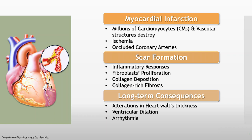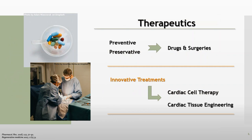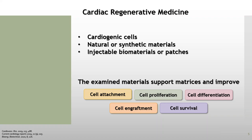As a consequence, fibroblasts are proliferating to maintain the heart's integrity, and therefore collagen-rich fibrosis replaces the dead myocardium. This non-functional remodeling leads to alterations in heart wall thickness, ventricular dilation, and arrhythmia. Common preventive and preservative therapies such as drugs and surgeries cannot successfully regenerate and restore the mechanical and electrical features of cardiac tissues. Therefore, it is necessary to move towards innovative treatments like cardiac cell therapy and cardiac tissue engineering.